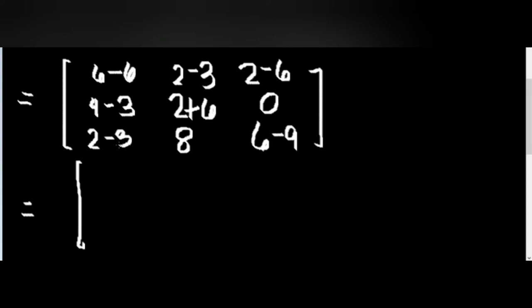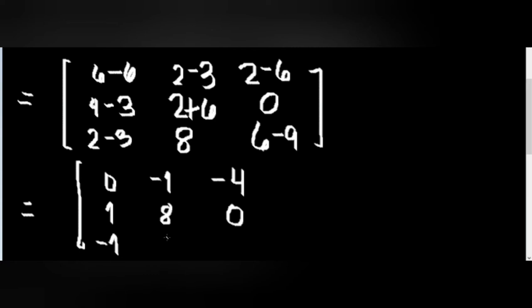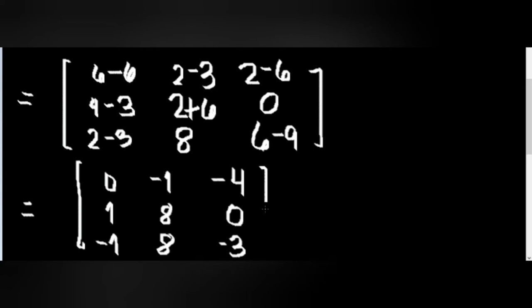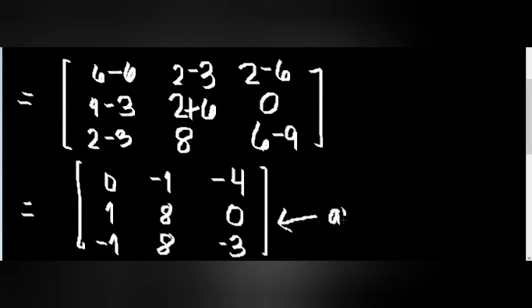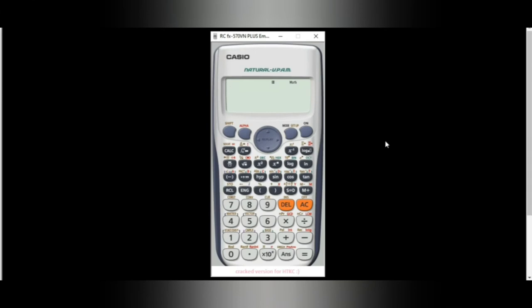Simplifying this: 6 minus 6 is 0, 2 minus 3 is negative 1, 2 minus 6 is negative 4. 4 minus 3 is 1, 2 plus 6 is 8, and 0. For the third row: 2 minus 3 is negative 1, then 8, and last is 6 minus 9 is negative 3. Therefore, this is the answer for evaluating 2A minus 3B. And this is how you solve a matrix.